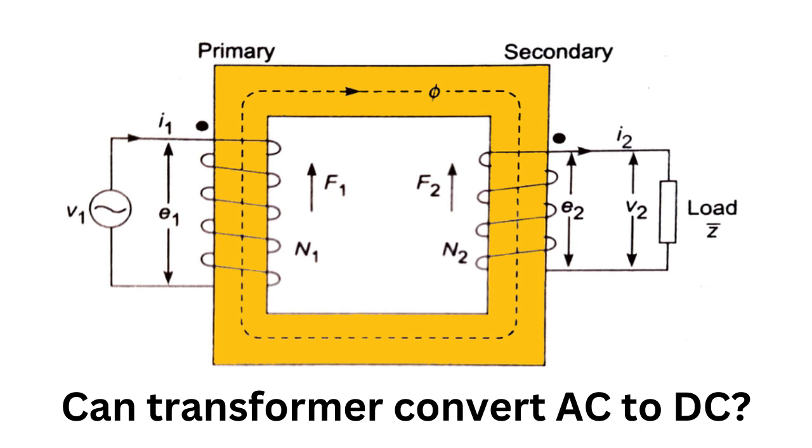To convert AC to DC, you would need a device known as a rectifier. A rectifier is an electronic device that converts AC to DC by blocking the negative half of the AC wave. This process is called rectification.